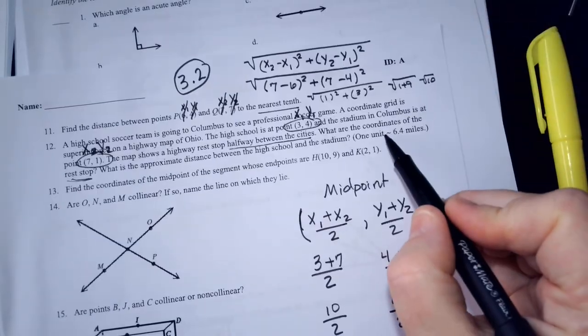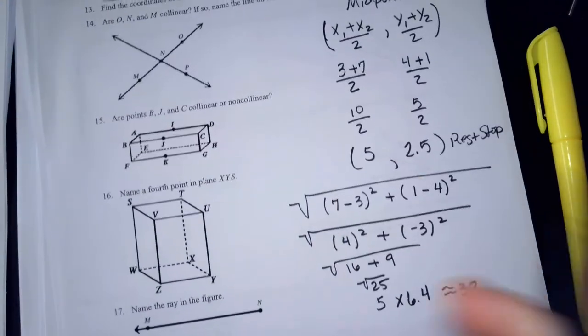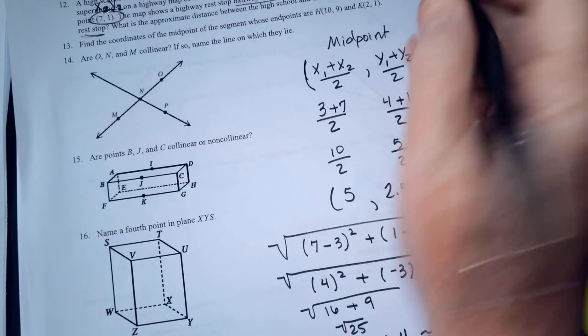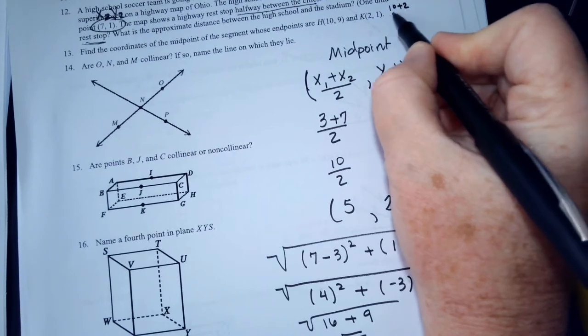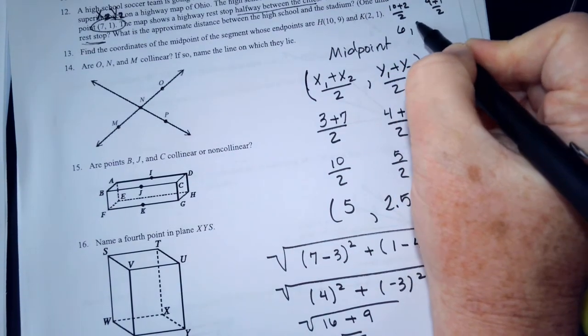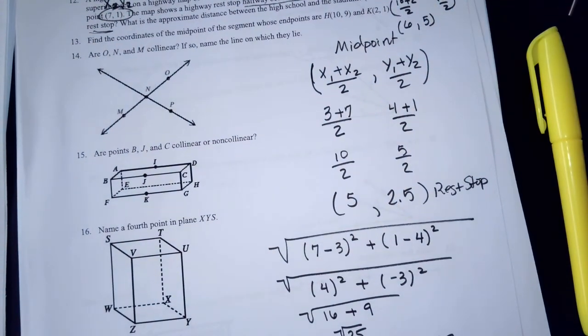So, find the coordinates of the midpoint. The coordinates of this midpoint, you're going to do the same process. 10 plus 2 over 2 and 9 plus 1 over 2. You're going to end up with 6 comma 5. Any questions on midpoint or distance? Okay.